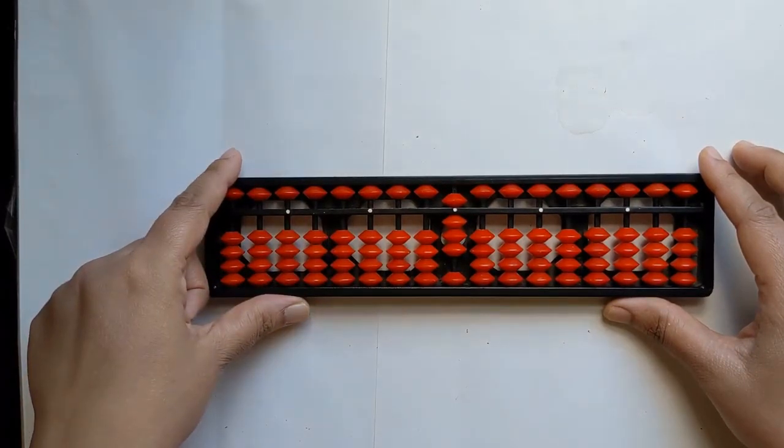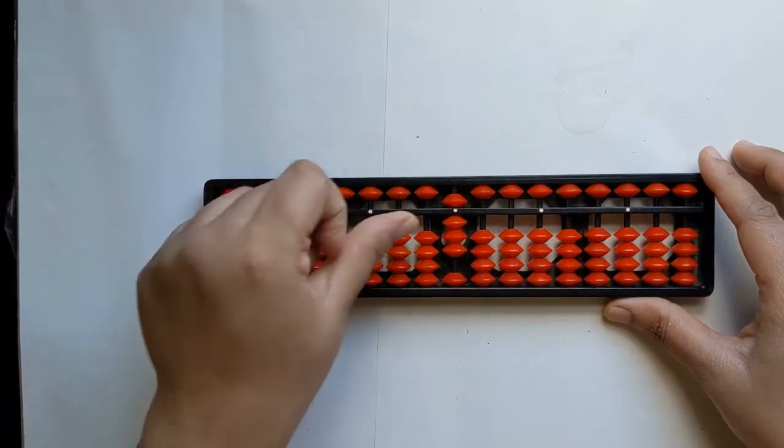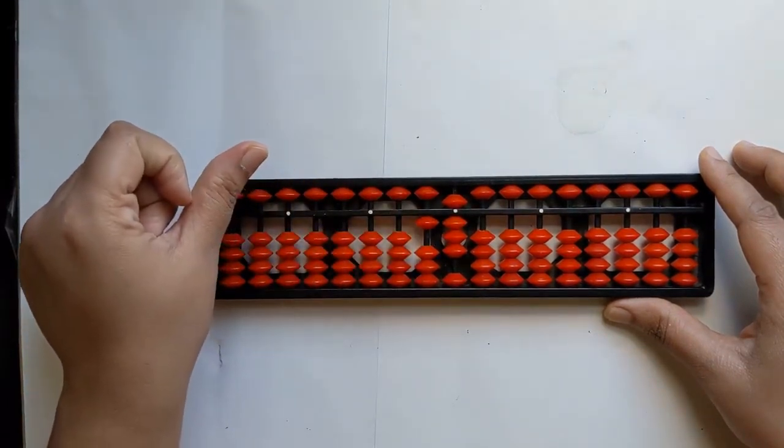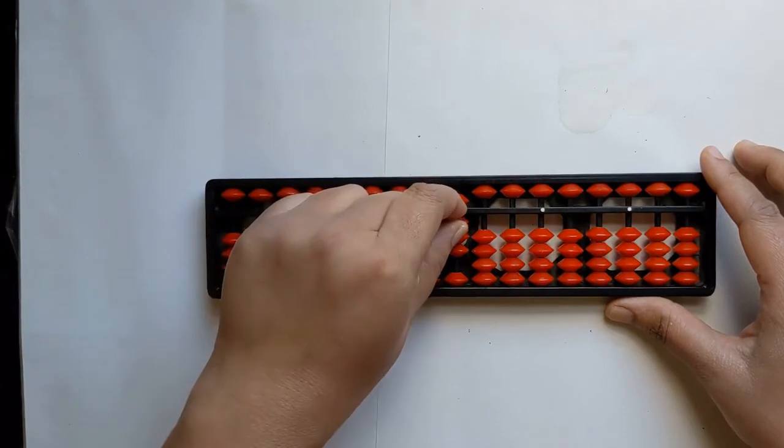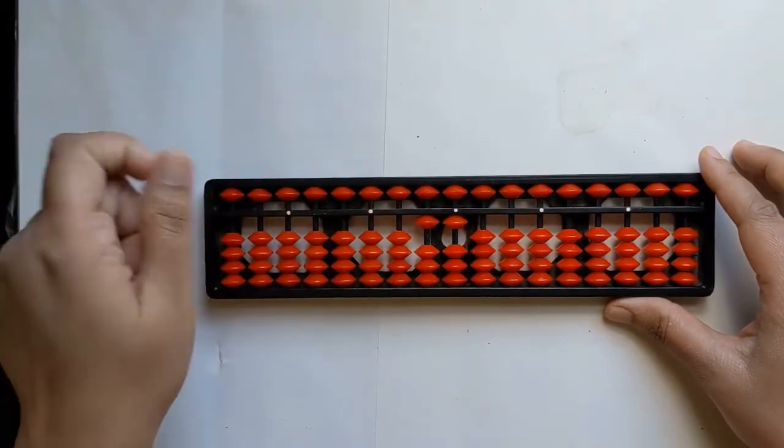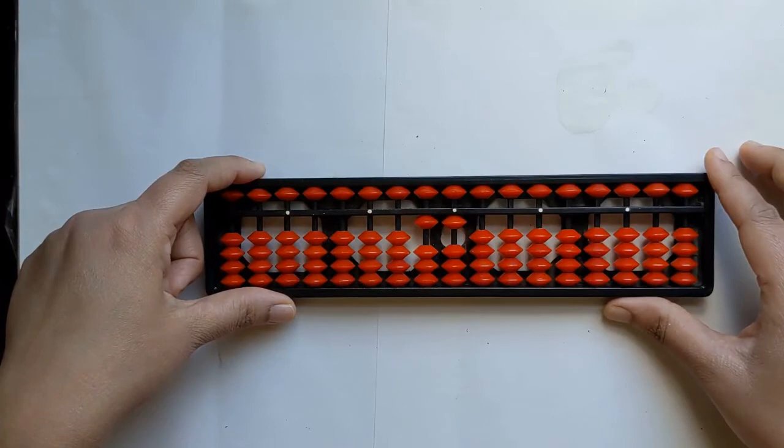We add 10 and remove 3's pair, that is 7, and we get 11.